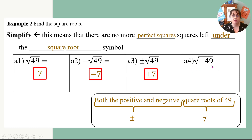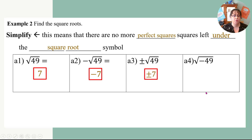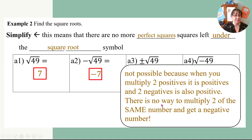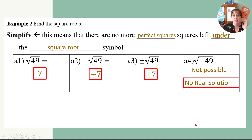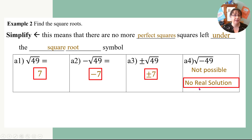For the next one, we're going to read this as the square root of negative 49. But that's not possible, because when you multiply two positives together you get a positive, and when you multiply two negatives together you also get a positive. There's no way to multiply two of the same numbers and get a negative. So we can't do this — right now. When you're in high school you'll find out how to do these. We are going to say no real solution.